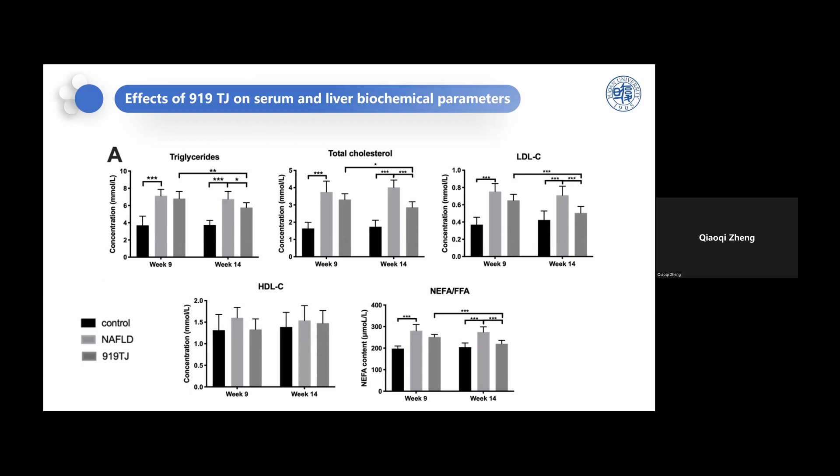To verify whether our model can cause liver function damage, we collected the blood of rats at week 9 and week 14 to detect their liver biochemical parameters. We can see that at week 9, the serum levels of TG, TC, LDL-C, and NEFA were significantly higher in the TJ group and model than control.